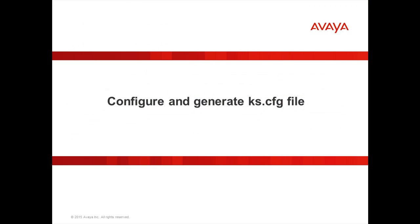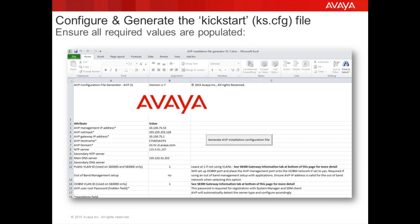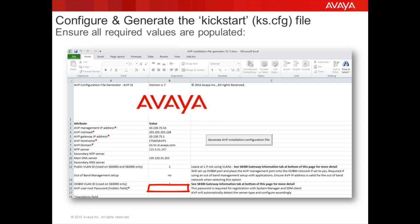Next, let's take a look at configuring and generating the kickstart file. Once you have downloaded the file from Avaya PLDS, you can open it with Microsoft Excel. You need to configure all the required fields marked with an asterisk. Note that the password field will disappear once you've entered your password, which is done for additional security. Don't worry — it will remain part of the kickstart file, but just won't be visible from Excel.